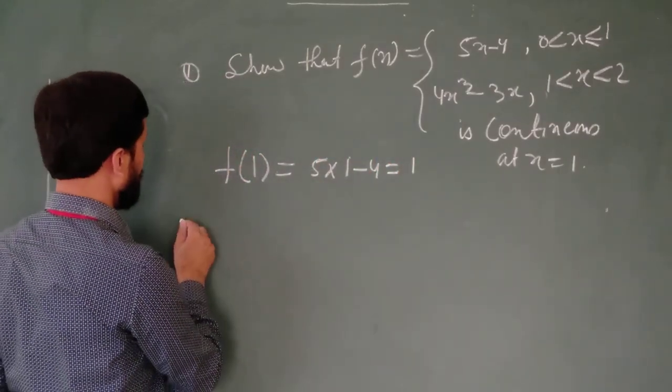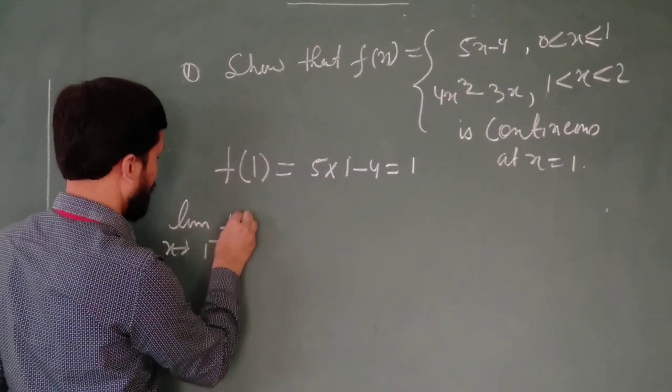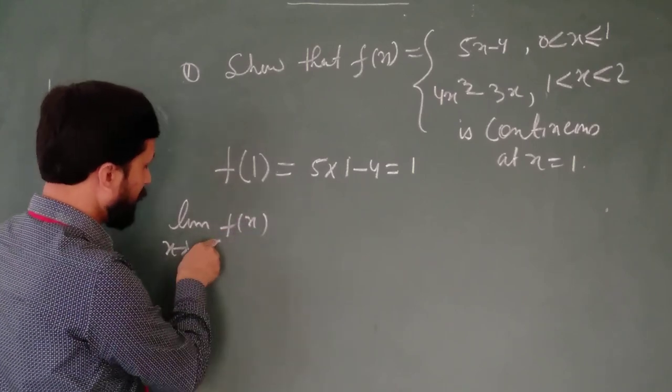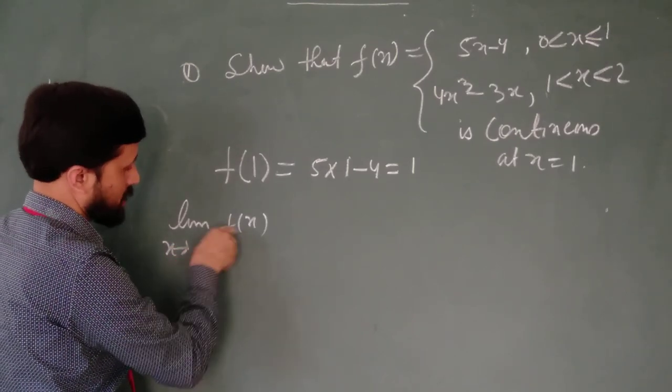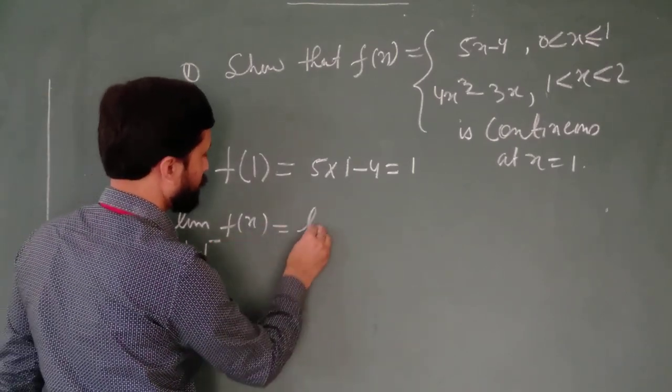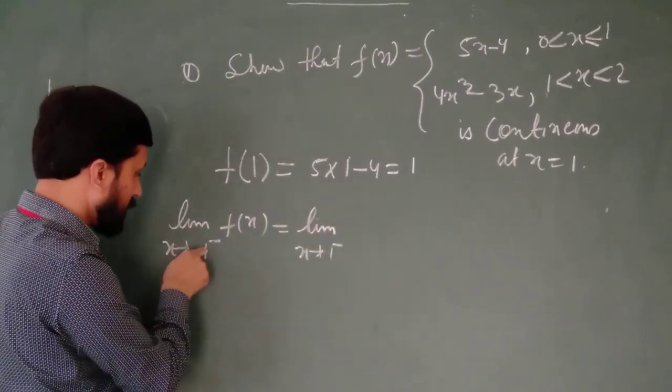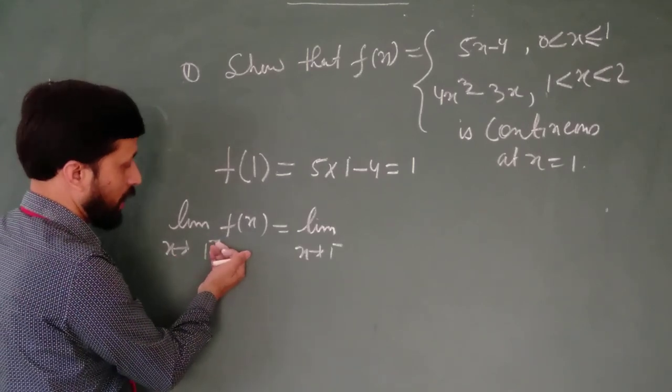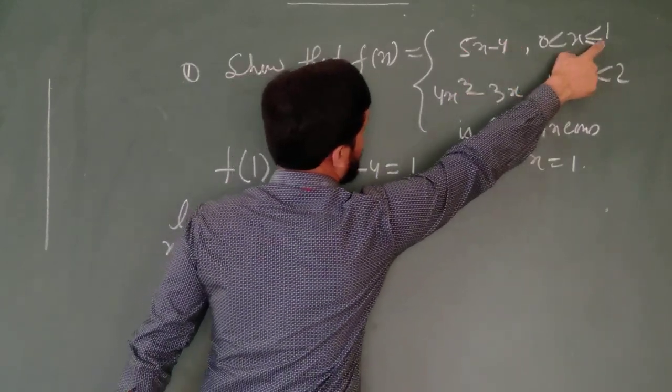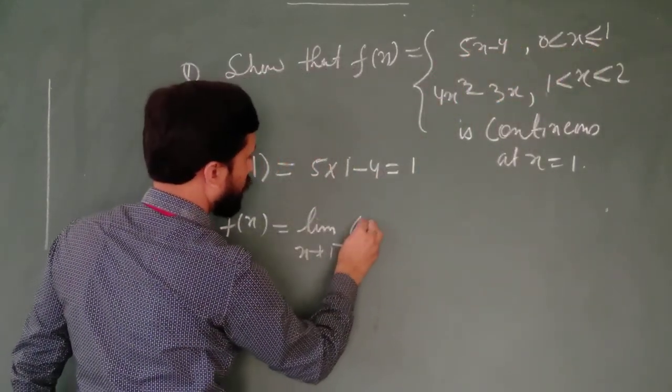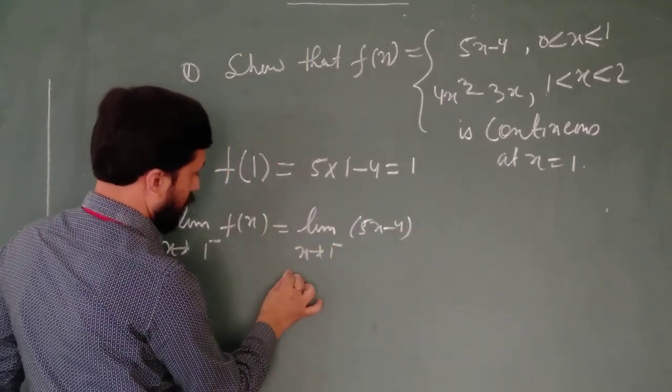Now find left hand limit. Limit x tends to 1 minus f(x). Here, minus sign is to denote that you are finding left hand limit for the function. Now, x tends to 1 minus, in place of f(x), this means when the value of x is slightly less than 1. So in that case, we have to use this expression, because for less than 1, we have this expression. So 5x minus 4.